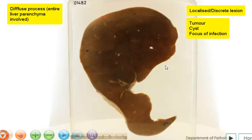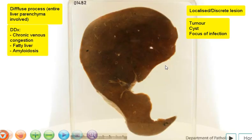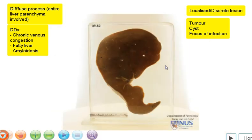In diffuse conditions of the liver, some common examples would include chronic venous congestion, fatty liver, and this condition, which is not as common — and this is an example of amyloidosis involving the liver.